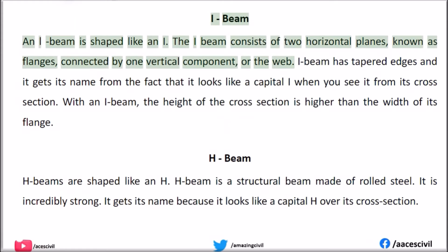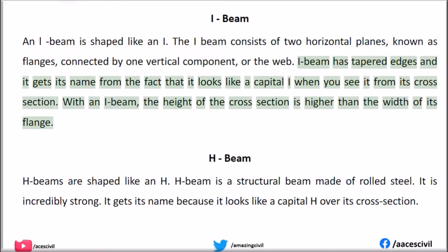An I-beam is shaped like an I. The I-beam consists of two horizontal planes, known as flanges, connected by one vertical component, or the web. I-beam has tapered edges and it gets its name from the fact that it looks like a capital I when you see it from its cross-section. With an I-beam, the height of the cross-section is higher than the width of its flange.